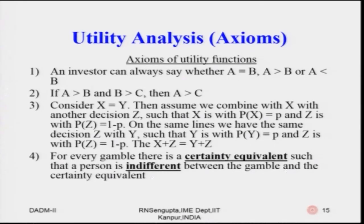For every gamble there is a certainty equivalent, such that the person is indifferent between the gamble and that certainty equivalent, and the expected values for both — the fair gamble and the certainty equivalent — are the same.